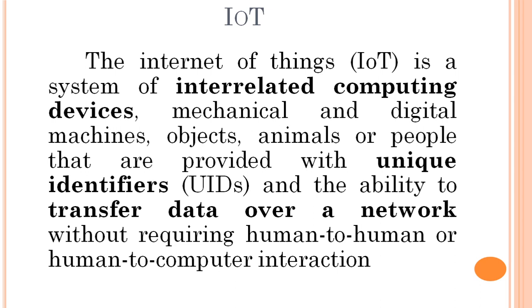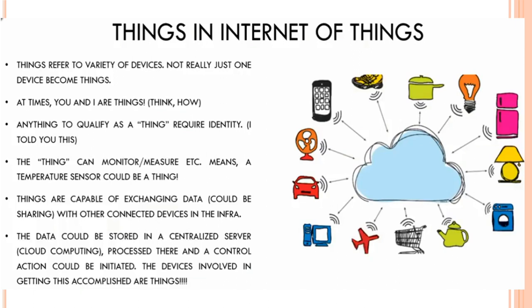Now we'll see the things and internet in detail. The internet — from a computer science point of view — interconnects systems all around the world so we can access data from anywhere, like accessing a Gmail account whose server is located in the USA. For the things in IoT, here in this figure I have represented some of the things that could be converted as part of the client network for your IoT.